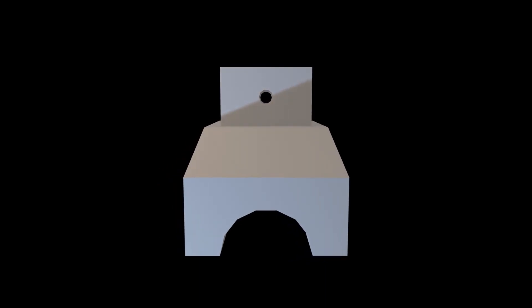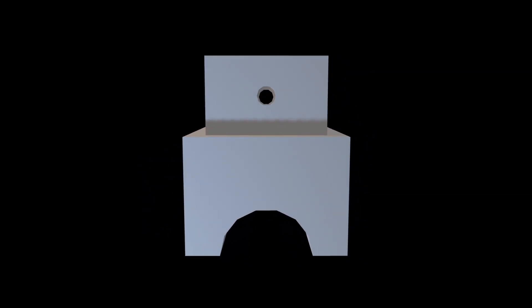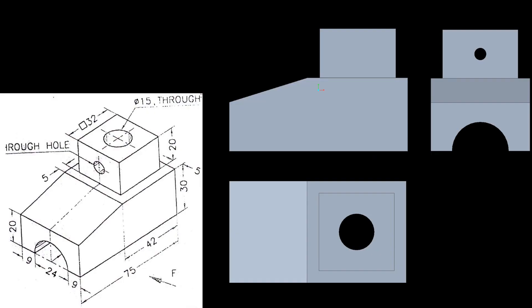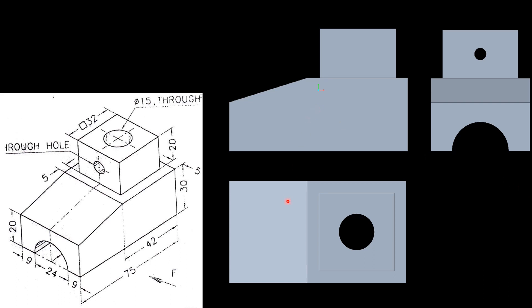We will look at the isometric view of the object. In the front view, we examine the isometric projection of the edges. The top view is derived from the right side reference. Let's identify the front view, top view, and one side view. The side view on the right will be the left side view of the object.